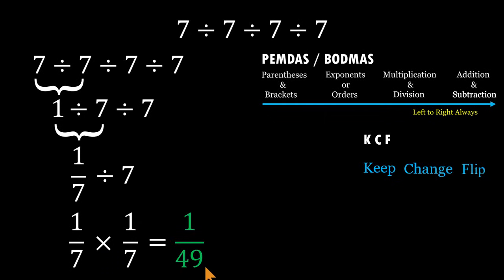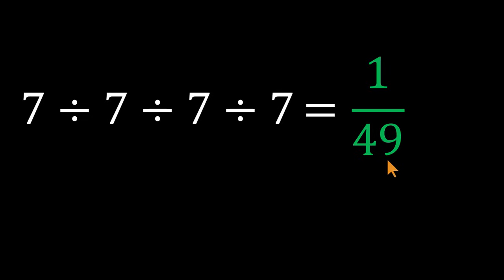That's the final answer: 1 over 49, not 1. If this just rewired your brain a little, tap like, share it with a friend who loves quick PEMDAS teasers, and subscribe to Beyond Numbers for more such challenges.